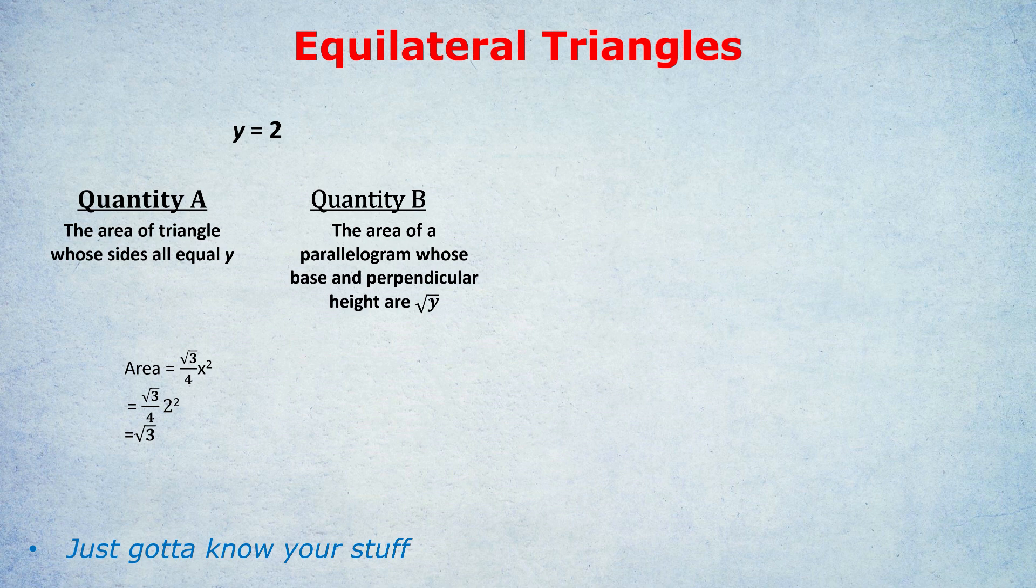In this case, root 2, because y is 2. So the formula is base times perpendicular height, which in this case would be root 2 times root 2. And what is root 2 times root 2? The roots cancel out. That's just 2. So quantity B is simply 2.